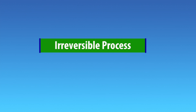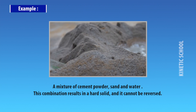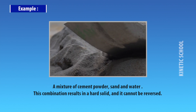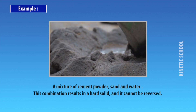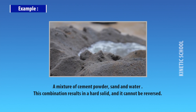An irreversible process is one in which the system and surroundings cannot be restored to the initial state from the final state. A mixture of cement powder, sand, and water is an example of an irreversible process — this combination results in a hard solid and it cannot be reversed.